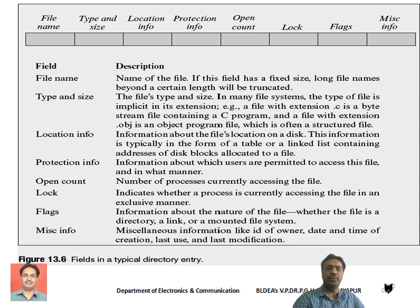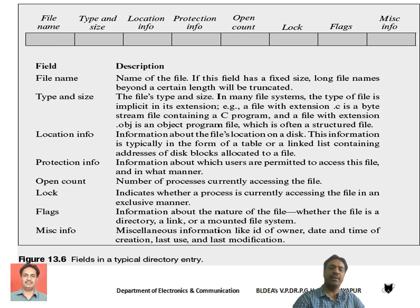Next we have protection information, which is mainly concerned with file permissions. The user who created the file is referred to as the owner. The owner can give different file permissions — allowing other users to read, write, or execute the file. The type of permissions granted by the owner are stored in the protection information field. Then we have the open count field, which contains a number indicating how many processes have currently opened that particular file.